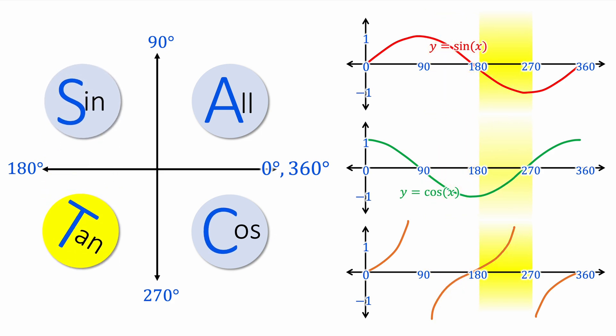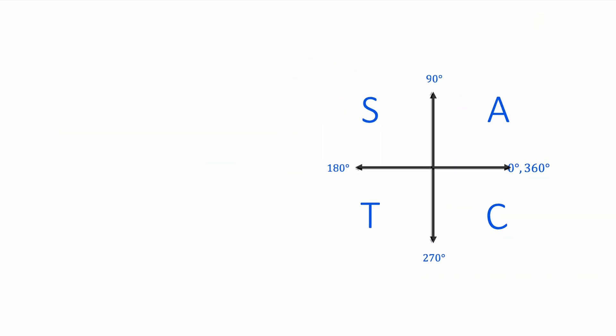Similarly, the tan graph between 180 and 270 is positive. So if the tan graph will have a second solution to a positive answer, it will be between 180 and 270. And finally, the cos graph between 270 and 360 is positive. And therefore, it will have repeated solutions in the fourth quadrant between 270 and 360.